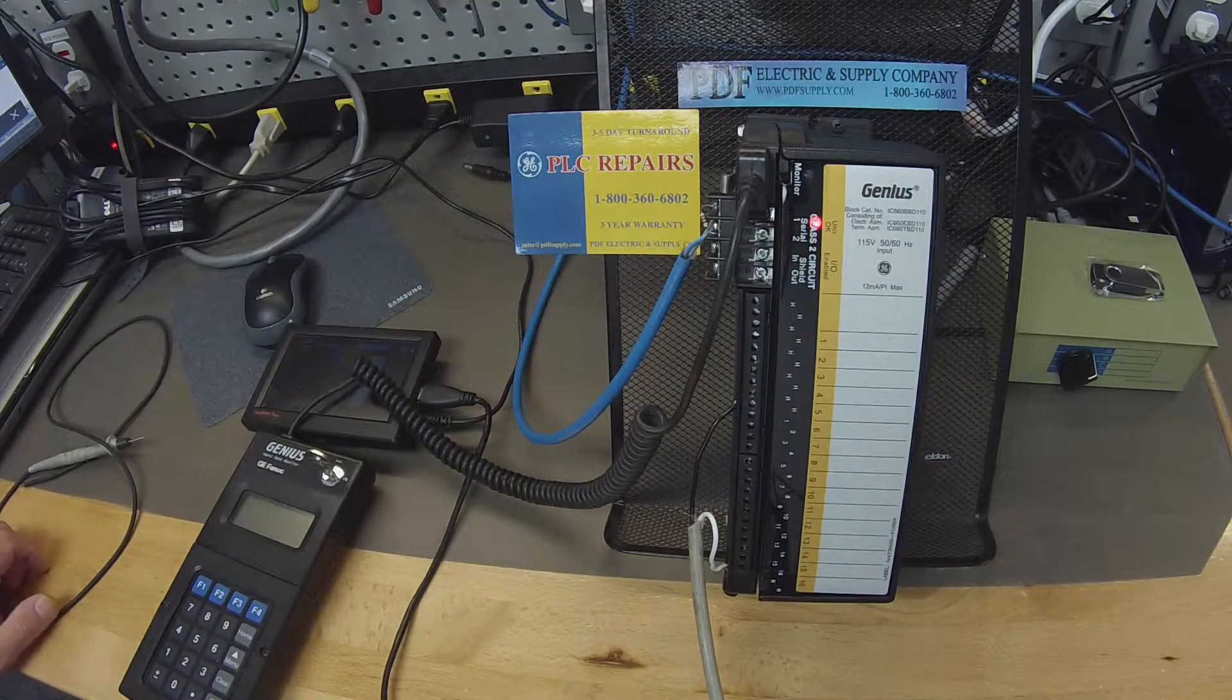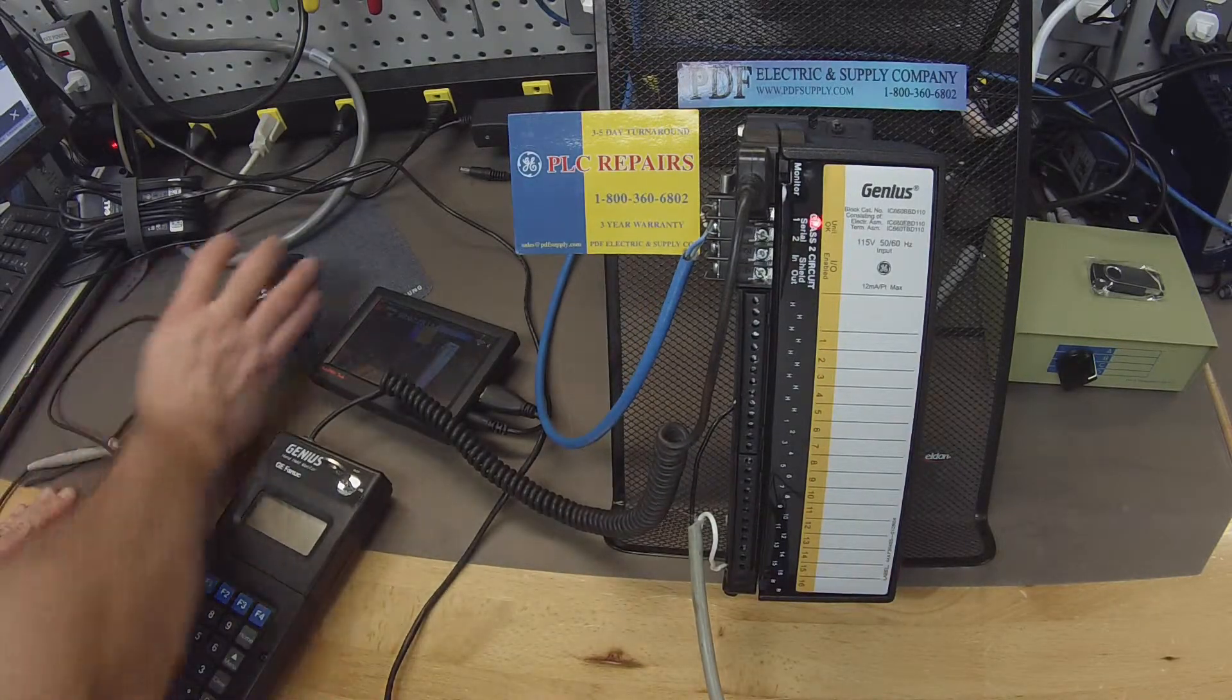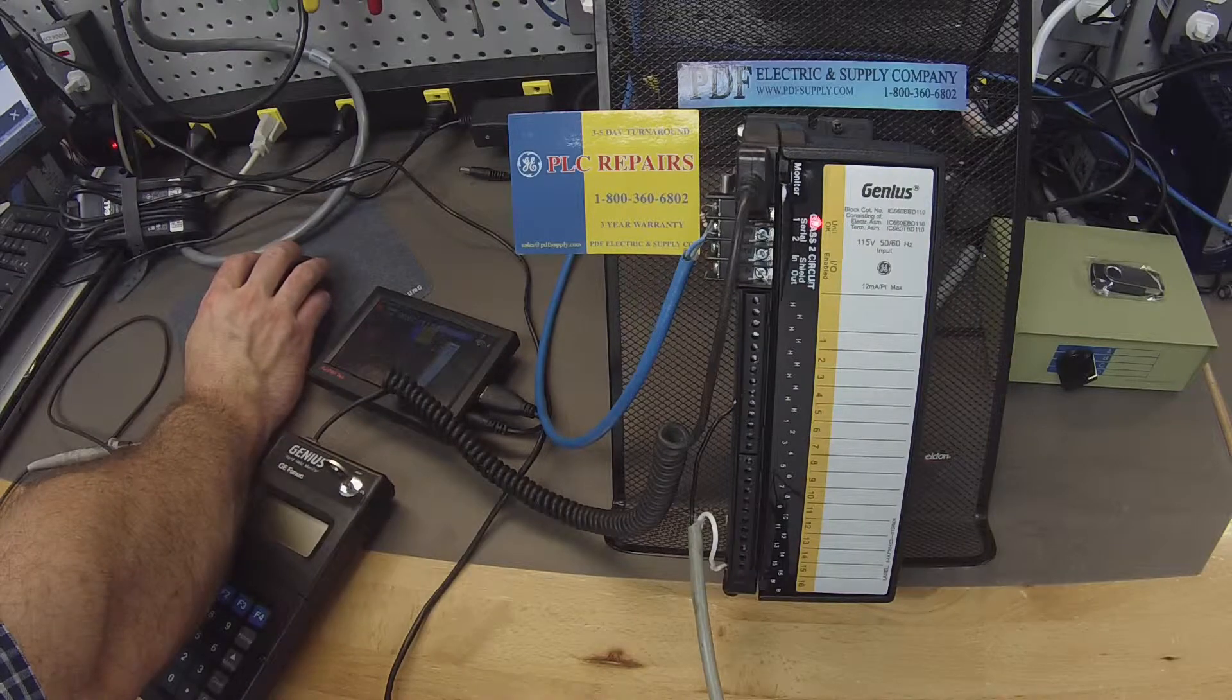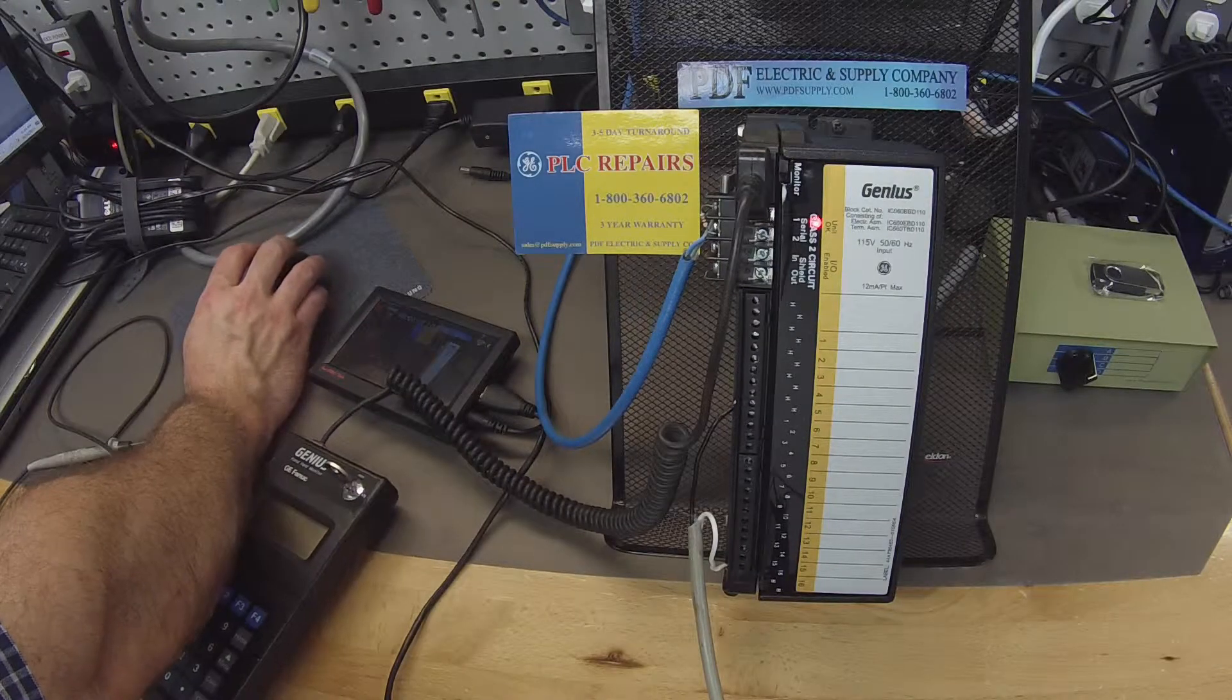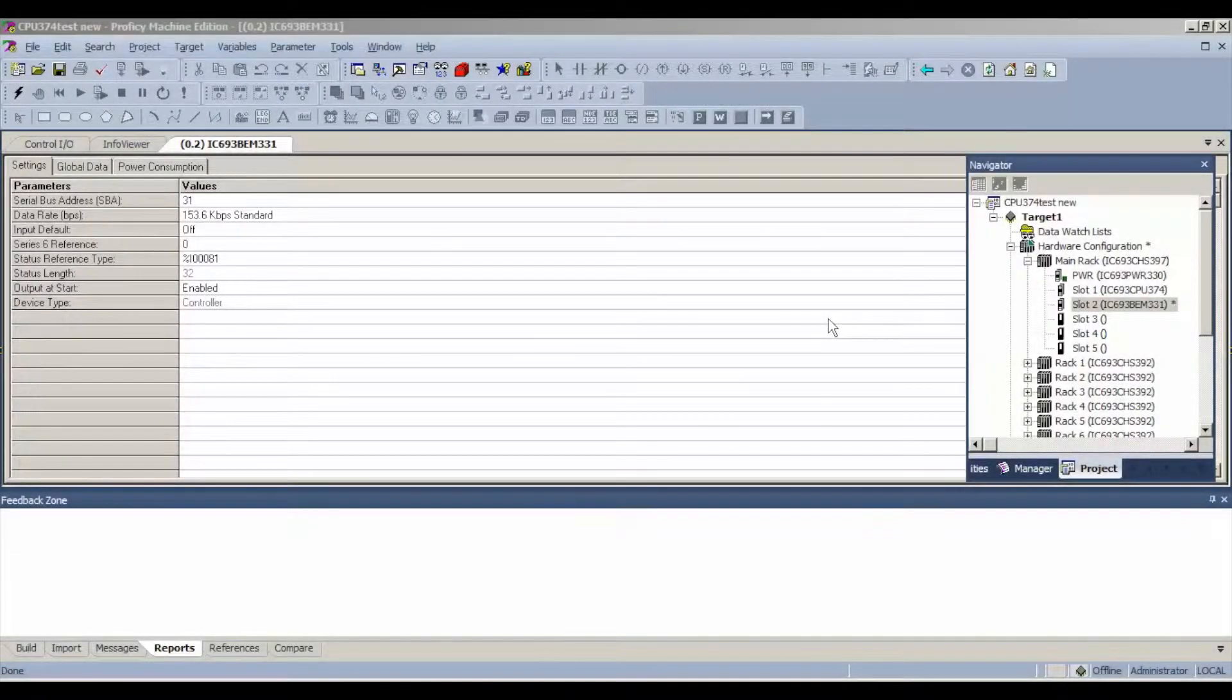Once it's powered up, a couple things I'm going to do. I'm going to actually start this test in Proficy Machine Edition. What that means is we're going to start configuring the Genius Bus Controller. The reason that we want to have the Bus Controller working is we want to make sure that this block behaves properly with the software through the serial cable through the Genius Bus Controller.